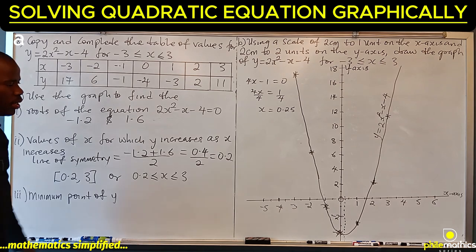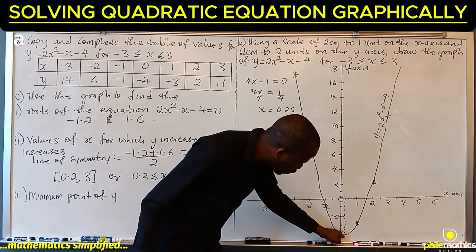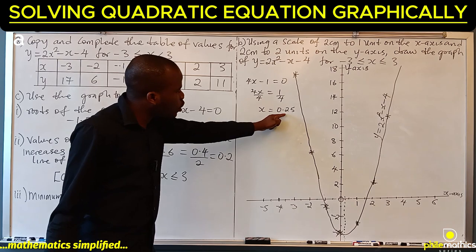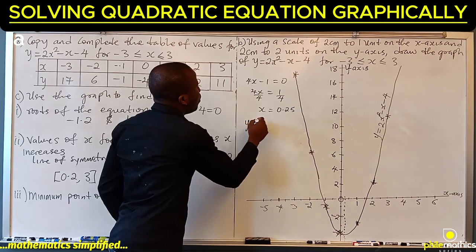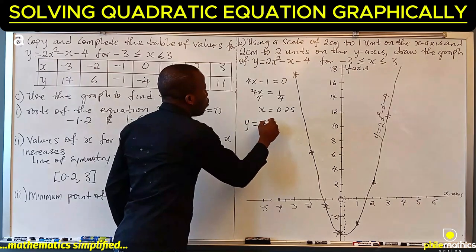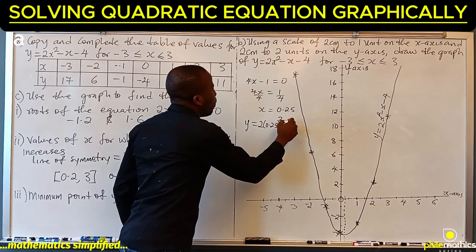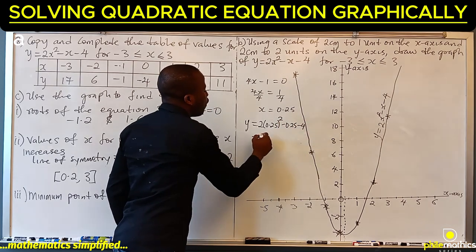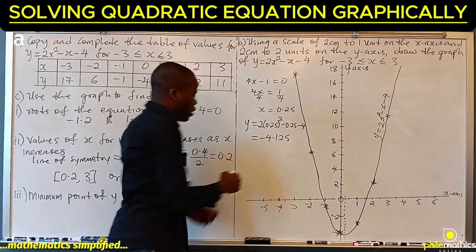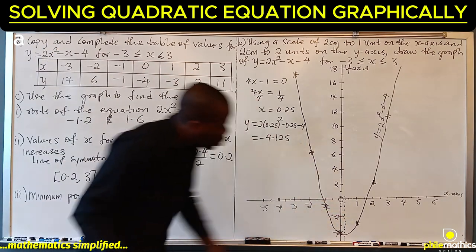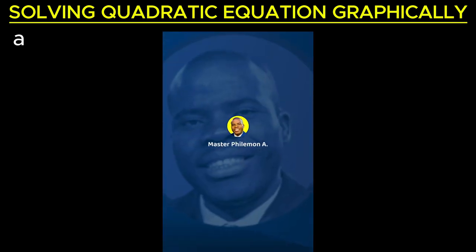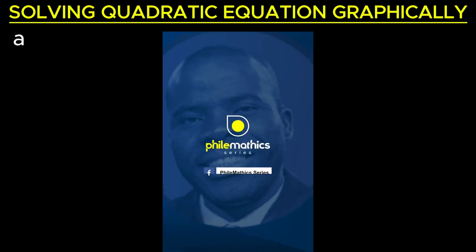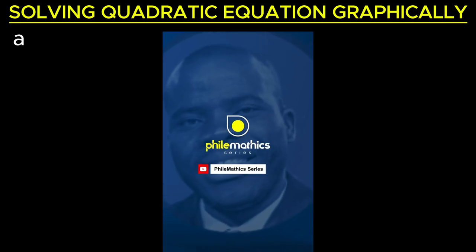The minimum point of y is the value of y at the turning point. Substitute x = 0.25 into the equation: 2 times (0.25)² minus 0.25 minus 4 gives minus 4.125. From the graph it reads as approximately minus 4.1, so the minimum point of y is minus 4.1. The maximum point on the boundary is about y = 17 at x = -3.